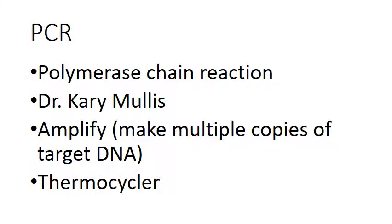Last time we talked about the polymerase chain reaction — PCR — and we said this was a discovery that Dr. Kary Mullis won the Nobel Prize for in 1993. He had discovered it in 1983 and received a bonus of around ten thousand dollars that year just for discovering it, plus of course the Nobel Prize money on top of that. He's a well-known chemist.